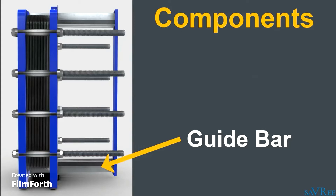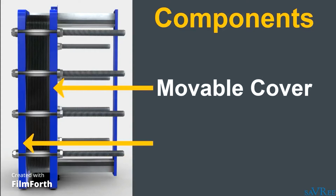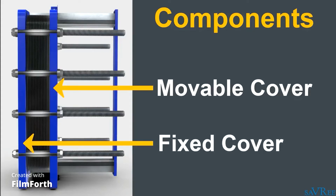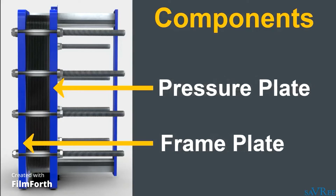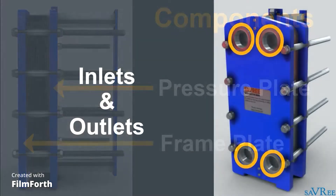The final components of interest are two covers at opposite ends of the plate stack. One cover is moveable, whilst the other is fixed. The moveable cover and fixed cover are also sometimes referred to as the frame plate and pressure plate. Note that the inlets and outlets are mounted to the fixed cover only.